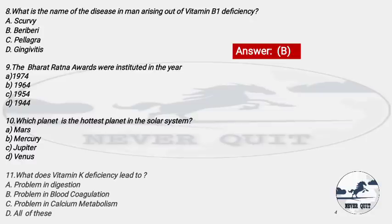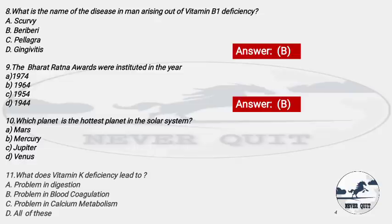Question 9: Bharat Ratna awards were instituted in the year — Options: A) 1974, B) 1964, C) 1954, D) 1944. The right answer is option C — 1954. Bharat Ratna is our highest civilian award and was started in 1954. Note: there was an editing mistake in the video showing option B initially, but the correct answer is 1954.